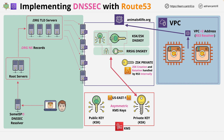Next, Route 53 has to establish the chain of trust with the parent zone. The parent zone needs to add a DS record — a delegated signer record — which is a hash of the public part of the key signing key for this zone. How we do this depends on whether the domain is registered via Route 53. If so, the registered domains area of the Route 53 console can be used. If not, this step must be performed manually. Once done, the top-level domain — in this case .org — will trust this domain via the delegated signer record, and the domain zone will sign all records within it using the key signing or zone signing keys.